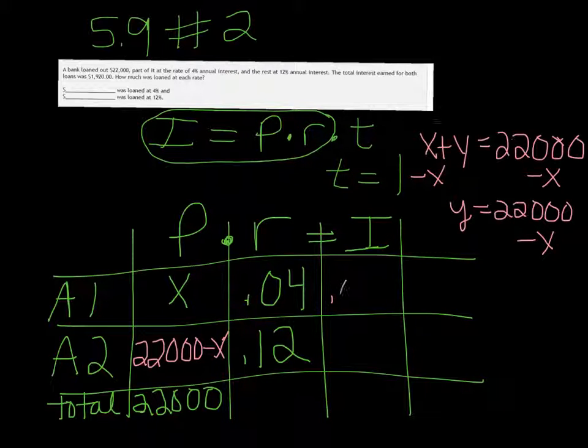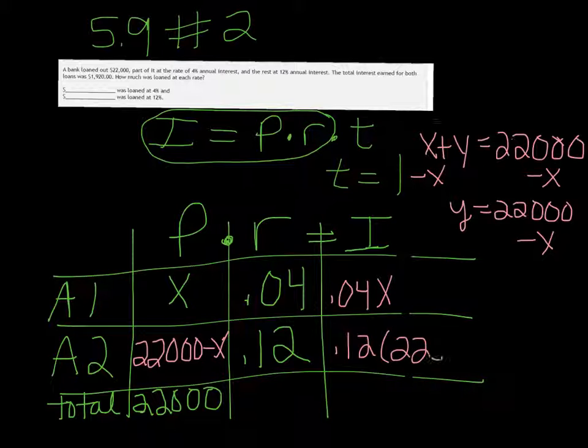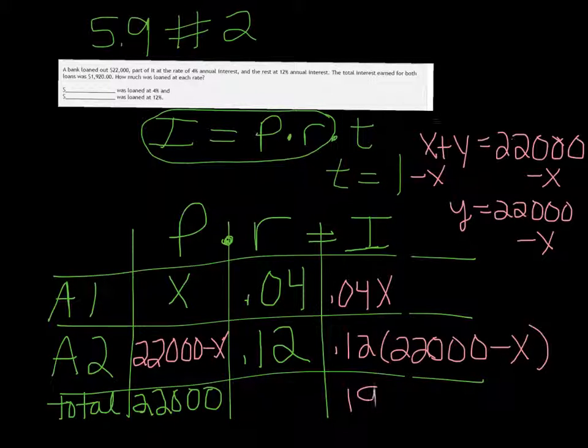So X times .04 would just be .04X. And 22,000 minus X times .12 would be .12 times 22,000 minus X. So there's still a bit of information we haven't used yet, and that's the total interest was given to us as $1,920.